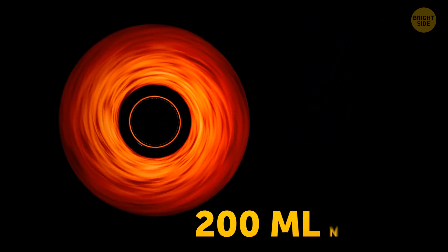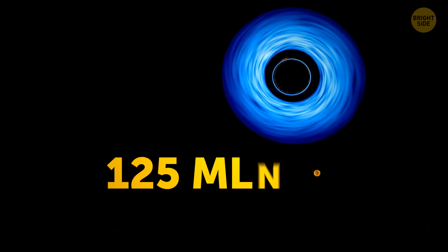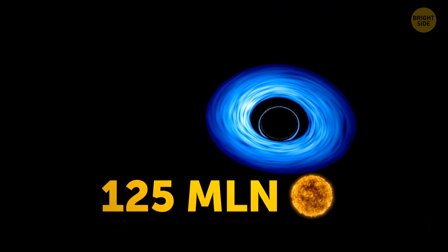One of the black holes is around 200 million times the mass of our sun, and the other is a bit smaller, only 125 million times larger.